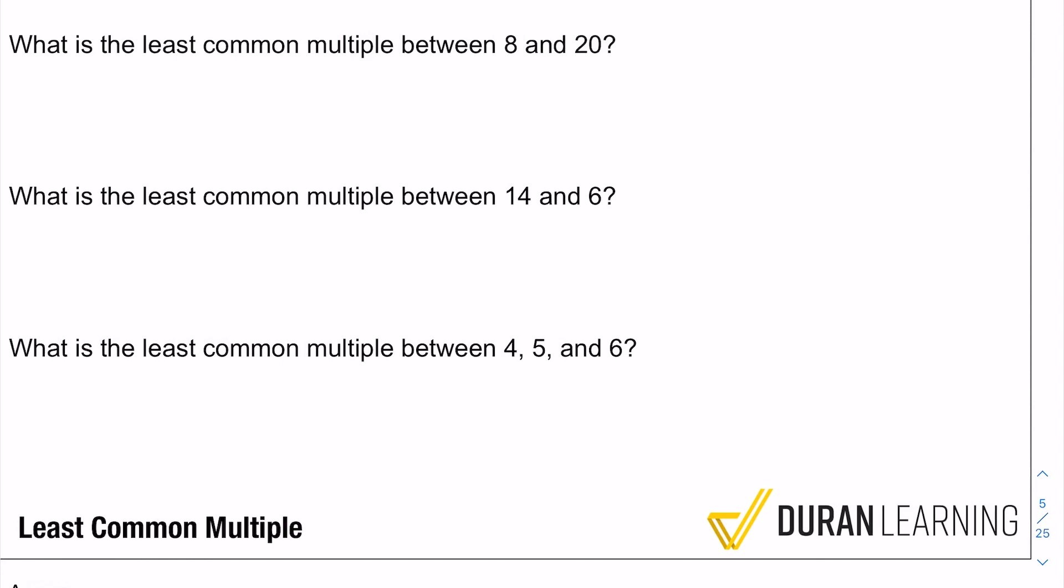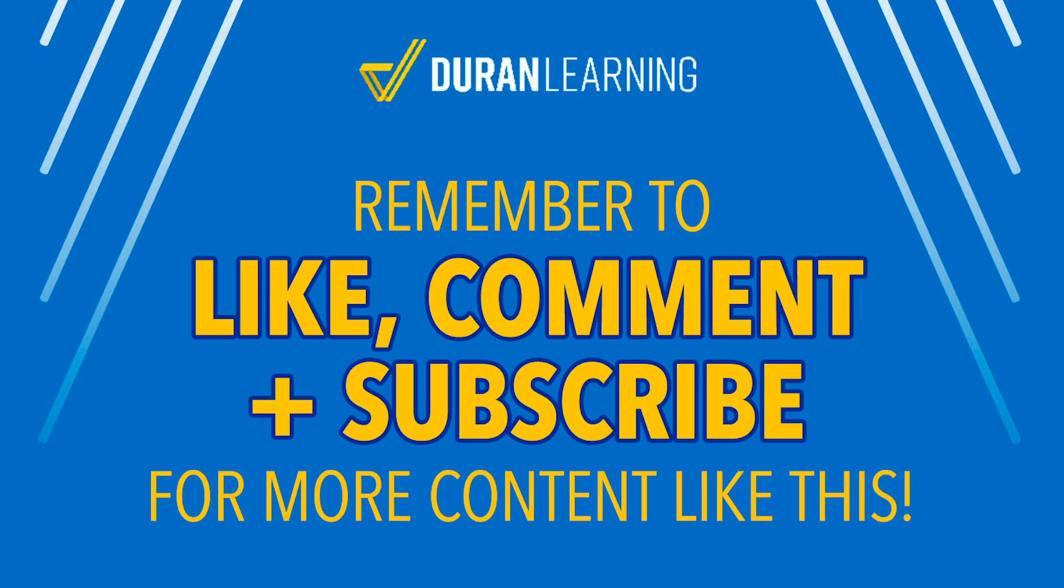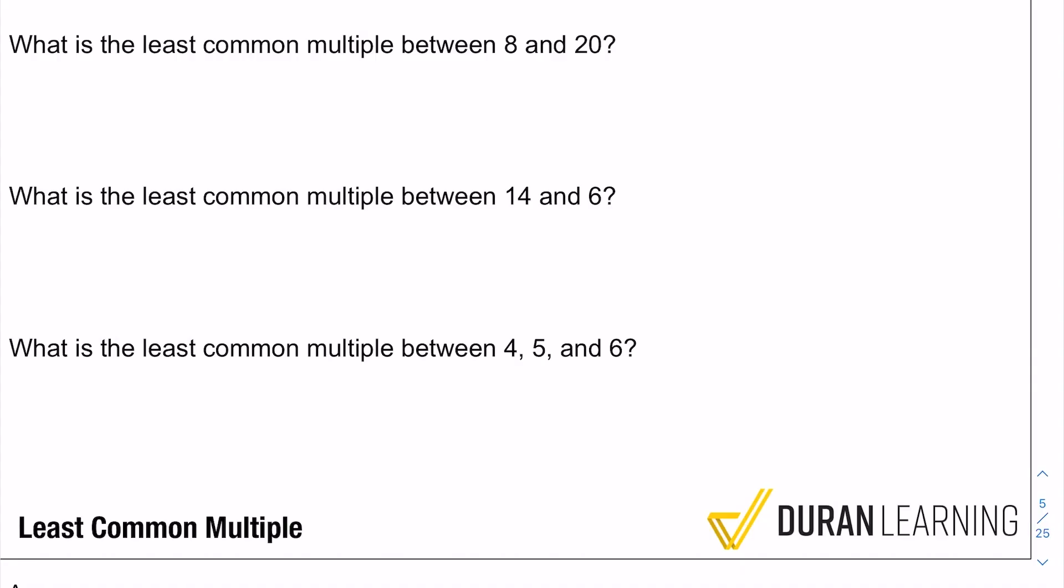Alright, what is the least common multiple between 8 and 20? So here's what least common multiple means - least common multiple means at which multiple of 8 and 20 are they the same. So better yet, let's just go ahead and draw it out and illustrate it.